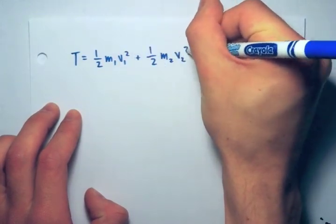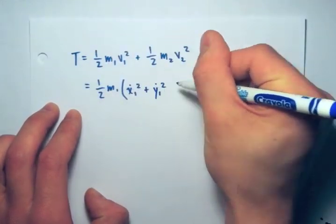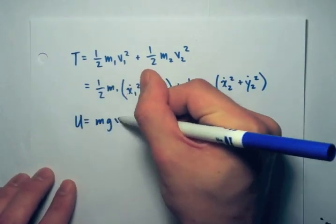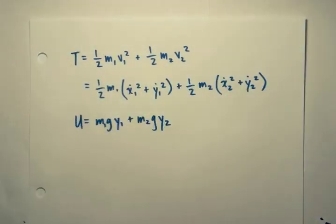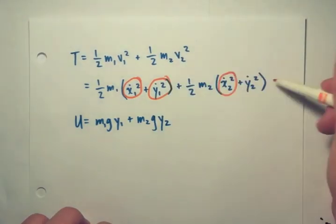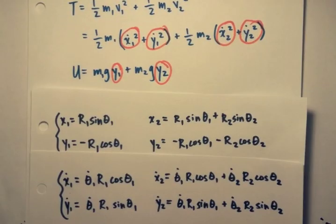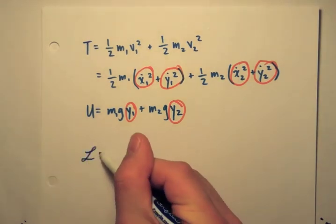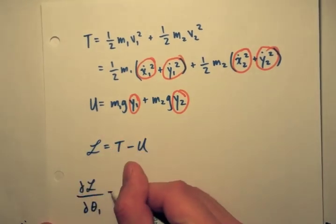All right, so we're going to find our kinetic and potential energies in terms of x and y and their derivatives. We are then going to substitute in for those values with what we found earlier in terms of r and theta, and then taking the Lagrangian as just T minus U.